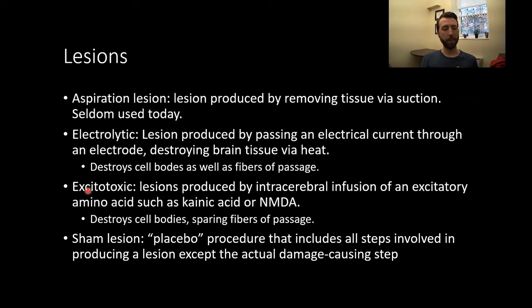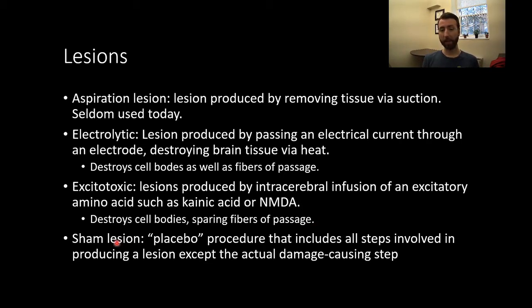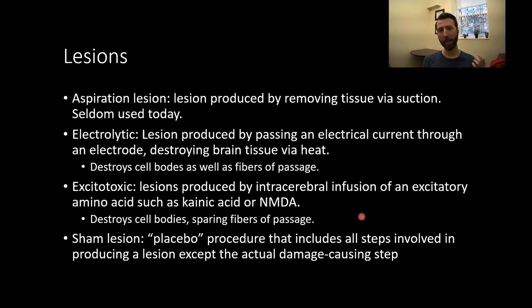The more modern approach is an excitotoxic lesion — produced by intracerebral infusion of excitatory amino acids such as kainic acid or NMDA. These are ligands for specific excitatory receptors that cause overexcitation of the cell, leading to cell death. This destroys cell bodies but not fibers of passage, since receptors are expressed primarily on cell bodies and dendrites. This is an advantage over electrolytic lesions, which destroy everything — if you destroy a tract of axons passing through a region, you may inadvertently disconnect regions.